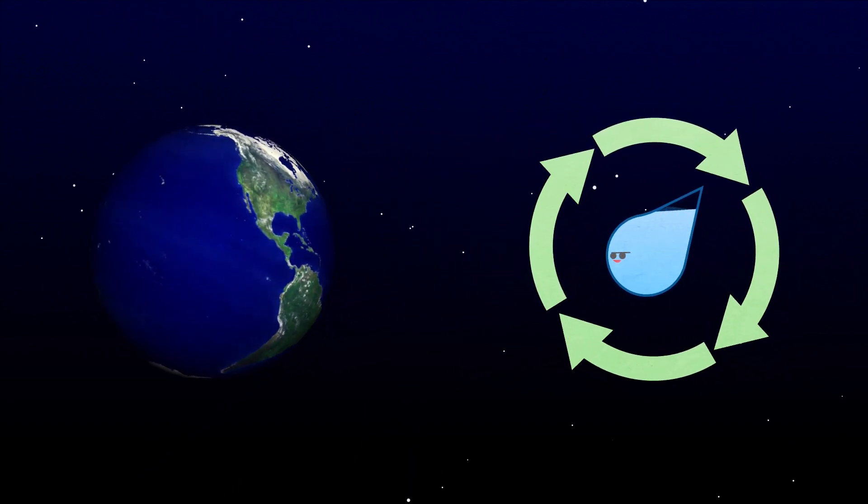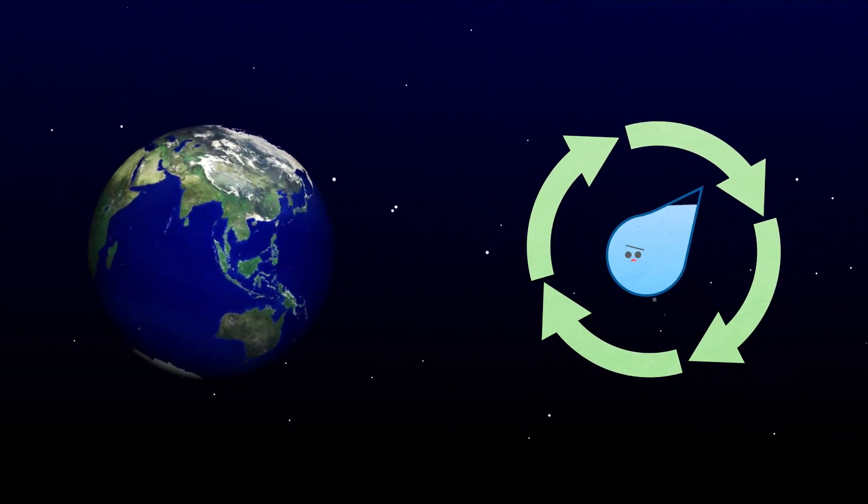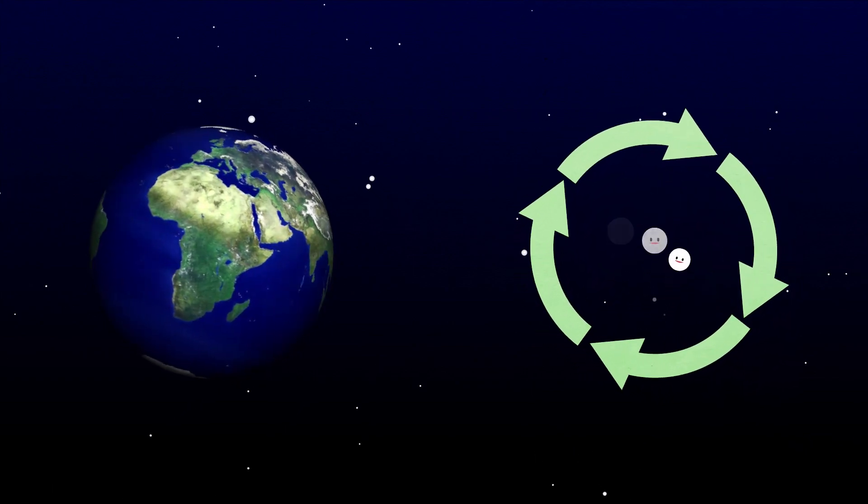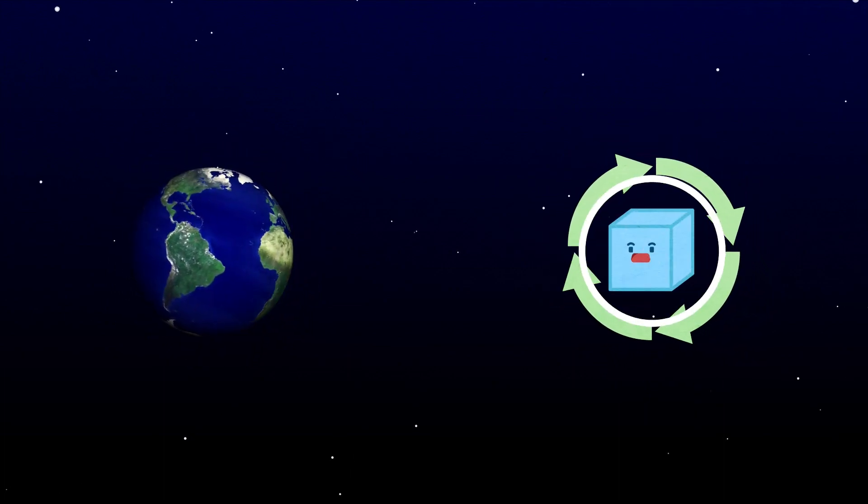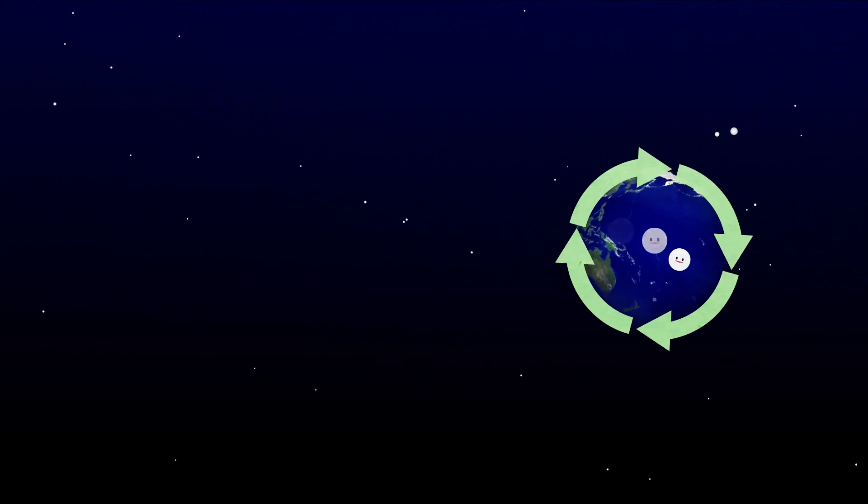If you could observe this enormous Earth you could see that water circulates endlessly as it changes form. Depending on the conditions it can change into solid, liquid and gas forms but it exists in the Earth's system and it's circulating.